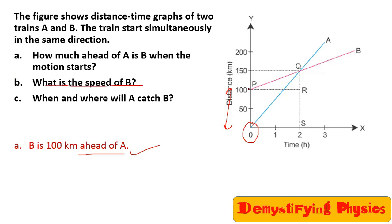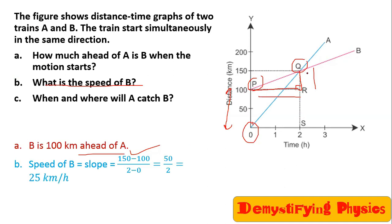Now what is the speed of B? B's line is a straight line, indicating uniform motion. Both trains are in uniform motion because both lines are straight. Take two points P and Q on the pink line and drop a perpendicular. Slope is perpendicular upon base. The perpendicular is 150 minus 100, and the base is 2 minus 0. So 50 upon 2 gives 25 kilometres per hour.